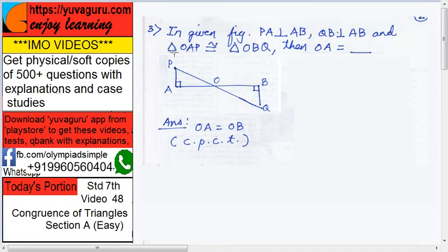It is given that triangle OAP is congruent to triangle OBQ. Therefore, OA will be congruent to OB by CPCT.